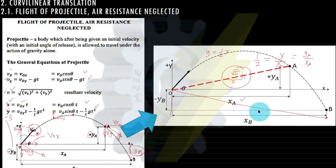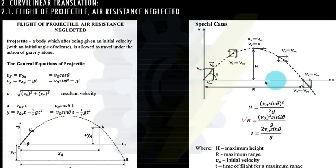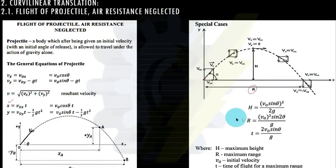Next, we have what are called special cases — these are shortcut formulas. The range R gives the maximum horizontal distance from the point of release, where the final position is at the same level as the release point. The total time of flight is measured from the point of release to that maximum range point.